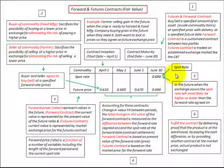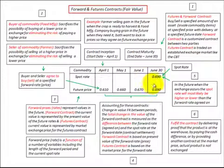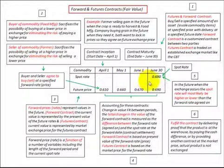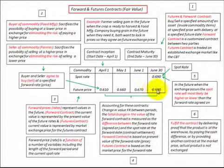In the future when this exchange occurs, the spot rate will most likely be either higher or lower than the forward rate agreed on. Looking at it in terms of our seller — the farmer — he would have had a loss because he gave up something of greater value than what he received. He could have received 69 cents a pound, but he only received 61 cents a pound. In the case of our buyer, the cereal manufacturer, he had a gain because he received something worth 69 cents a pound when he only had to pay 61 cents a pound for it.